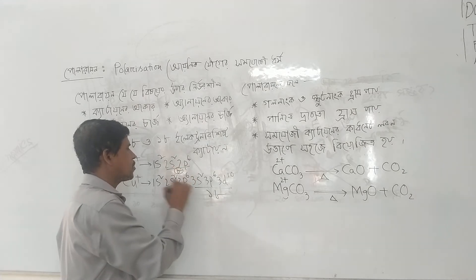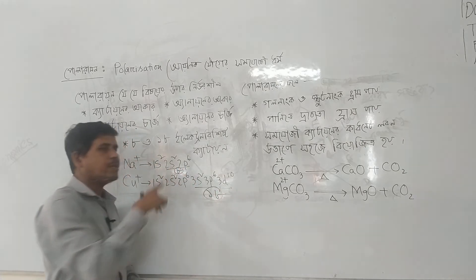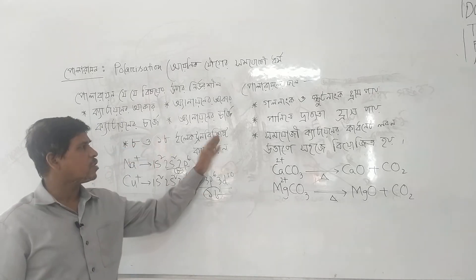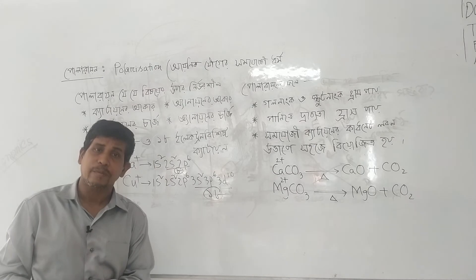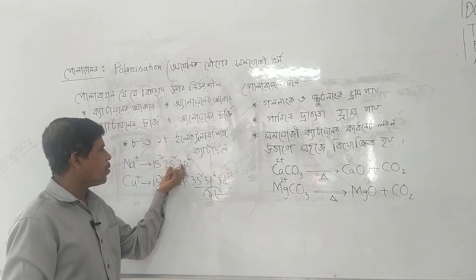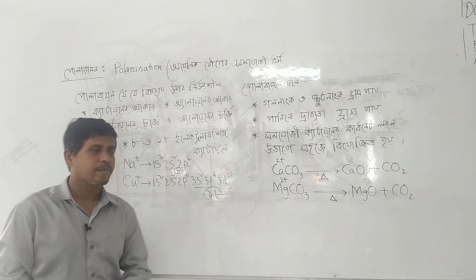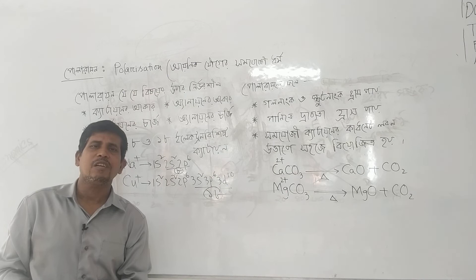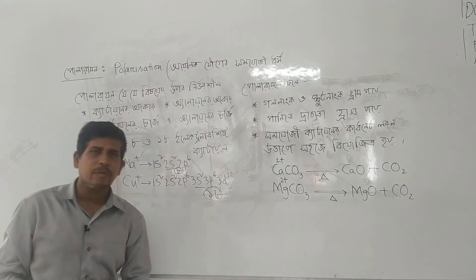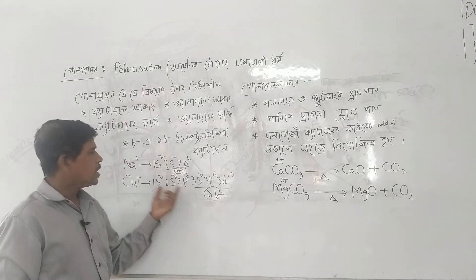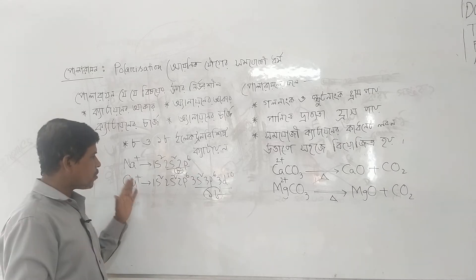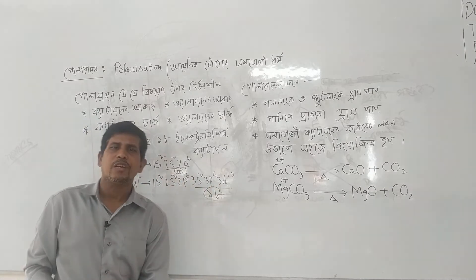If you have 8 electrons you will have configuration 1s2, 2s2, 2p4 — that is 8 electrons. The proton-to-electron shielding differs. If you compare sodium chloride and copper chloride, the copper chloride has more covalent character.